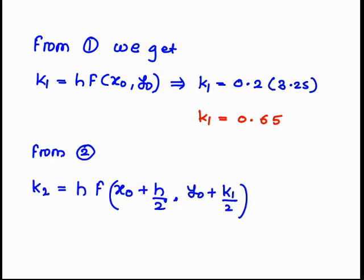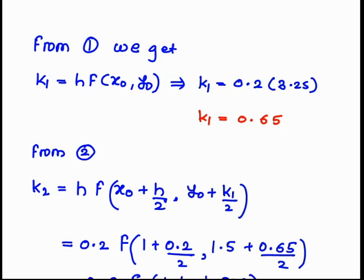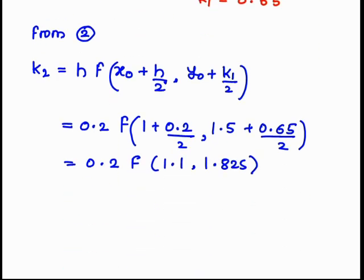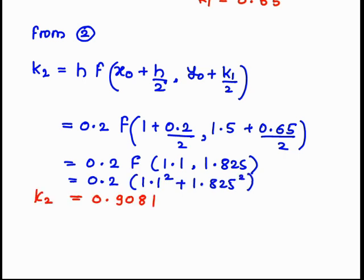Next, k₂ = h·f(x₀ + h/2, y₀ + k₁/2). Substituting h = 0.2, x₀ = 1, y₀ = 1.5, k₁ = 0.65, we get f(1.1, 1.825). The function is x² + y², so we compute 1.1² + 1.825². Therefore k₂ = 0.9081.